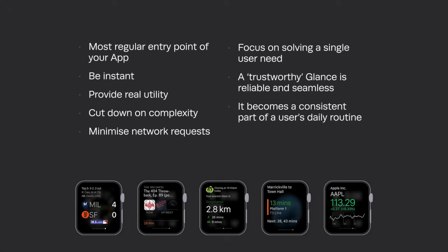Glances are the most important interface your users are going to interact with on your watch app. They're all about quick access, so minimize network requests as much as possible. Focus on solving one single user need — a weather app shows the current weather; if I need the full weekly forecast I tap into the app. A train app shows the next three trains; if I need more I tap in. Test the hell out of your glance. If your glance works consistently well, your user will start to rely on it and trust it.